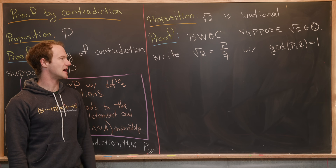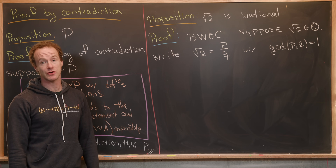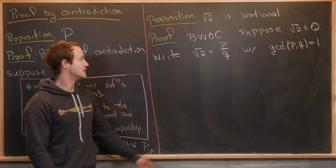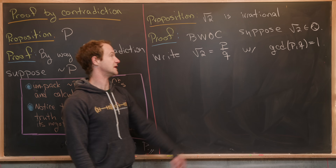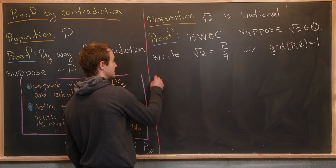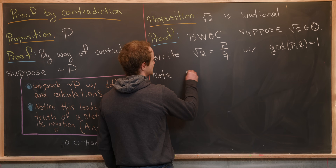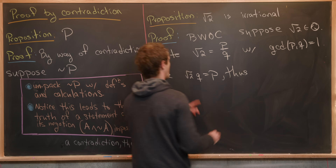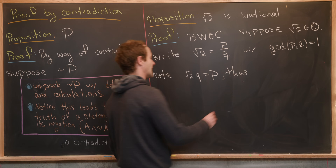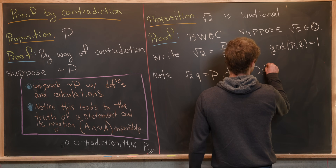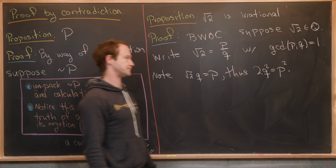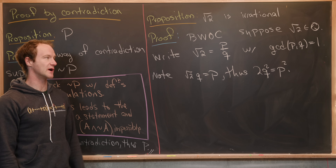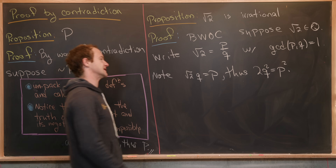Now we'll multiply both sides of this equation by q, so that we're working within the integers: root two times q equals p, and p is an integer. Note that the square root of two times q equals p. Thus, squaring this equation gives us two q squared equals p squared. But if p squared equals two q squared, that means p squared is even, and thus p is even.